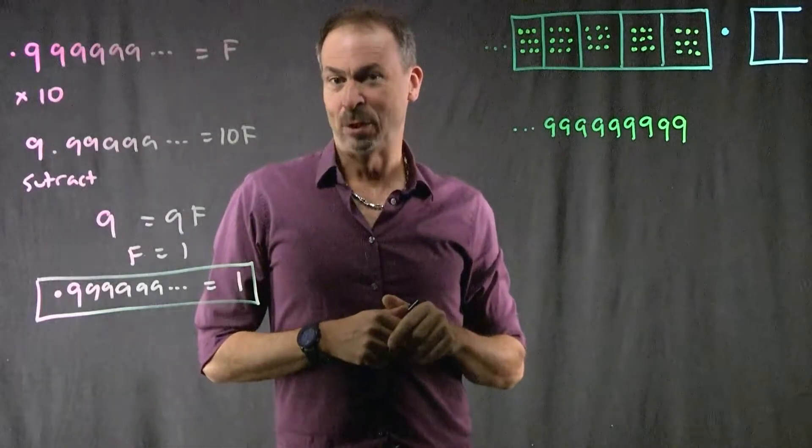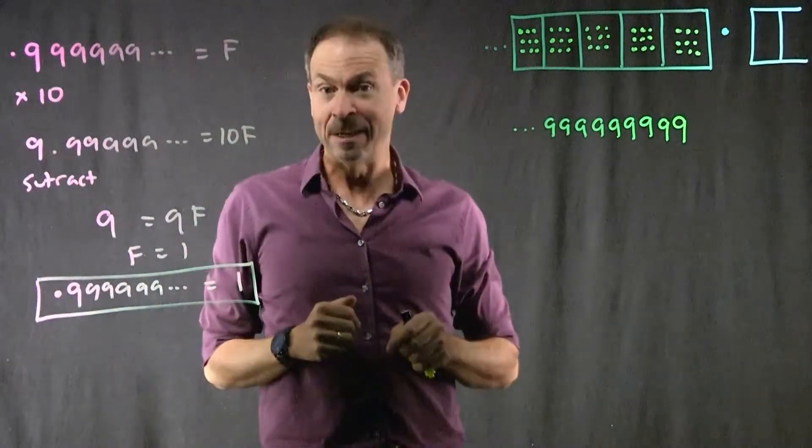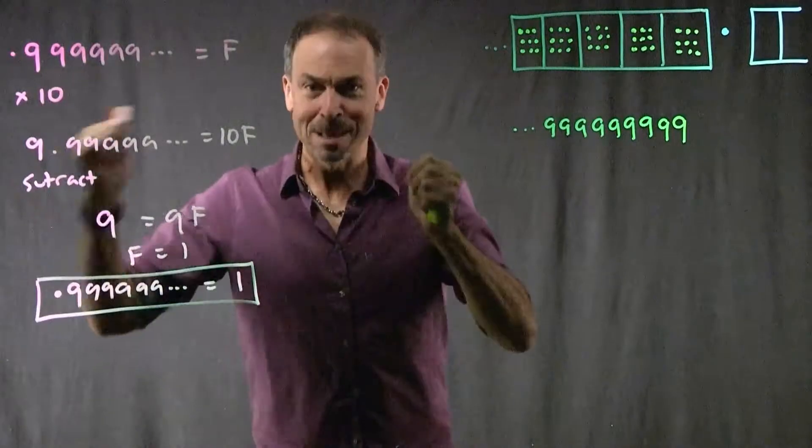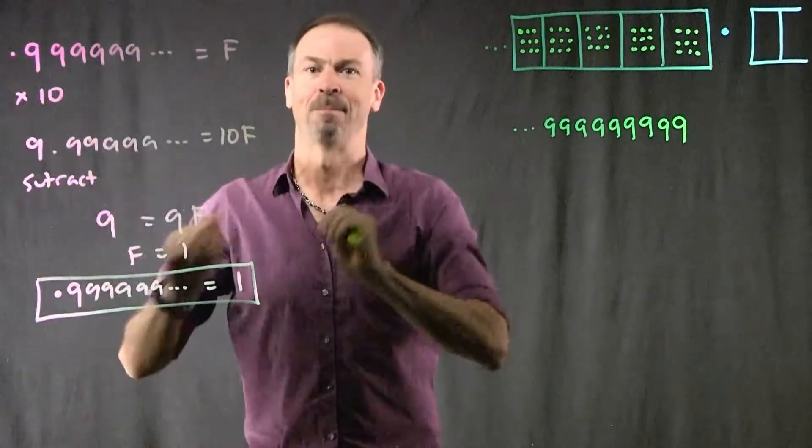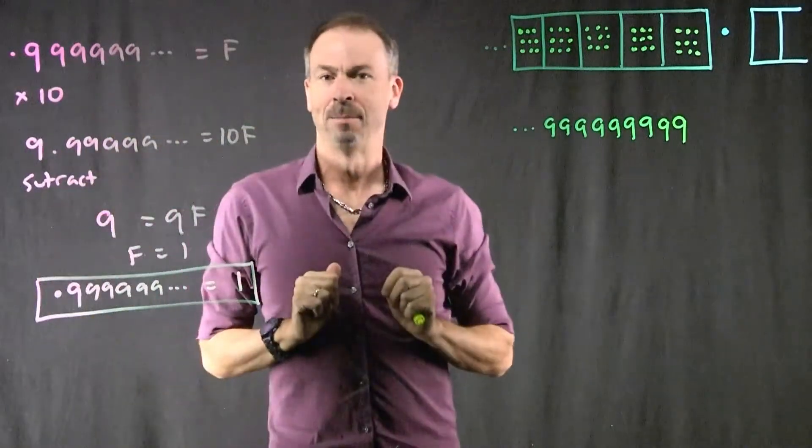G'day! Last time, we talked about the number 0.9999 going on forever, infinitely many nines to the right of the decimal point. And we did an ironclad mathematical argument to show that this has to equal 1. There it is. Beautiful argument. Ironclad seems fabulous.